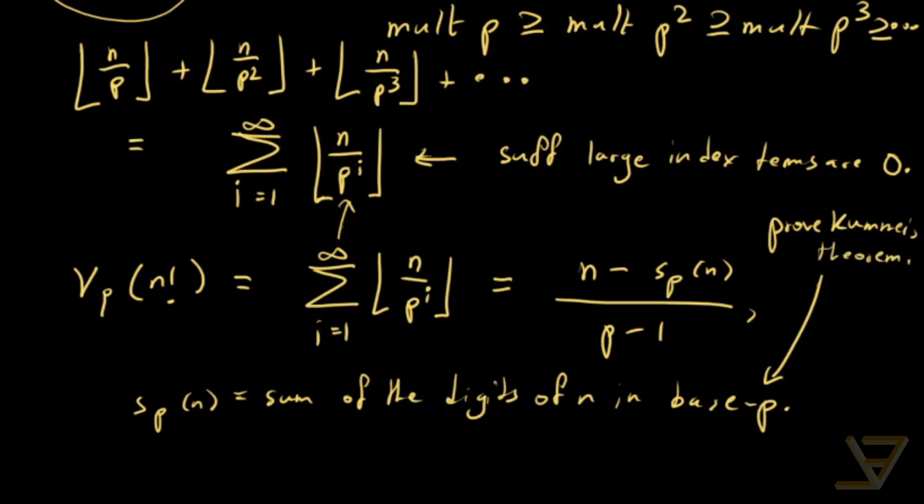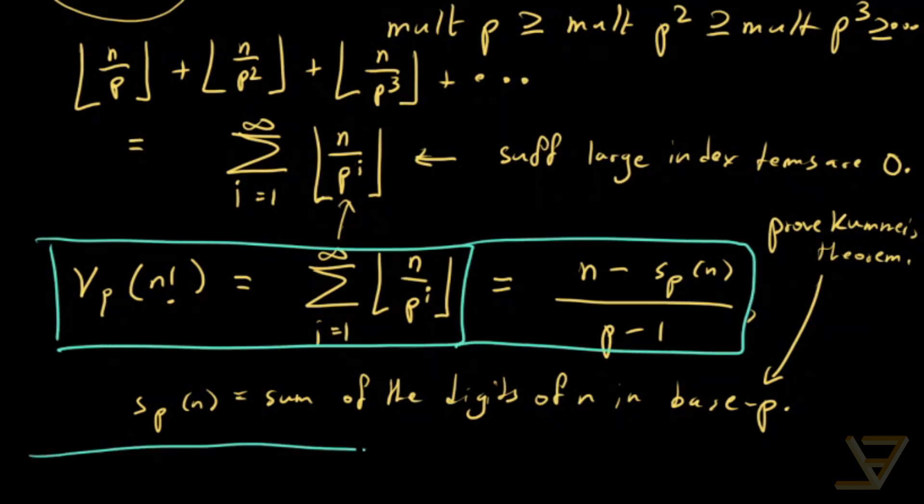Which is a substantial theorem in combinatorial number theory. It has to do with how many times a prime divides a binomial coefficient. So that's Legendre's formula. This is the first form and this is the second form. Thanks for watching and I'll see you next time.